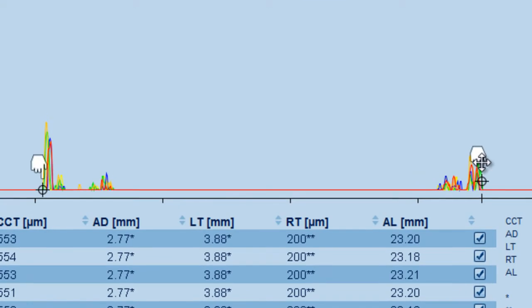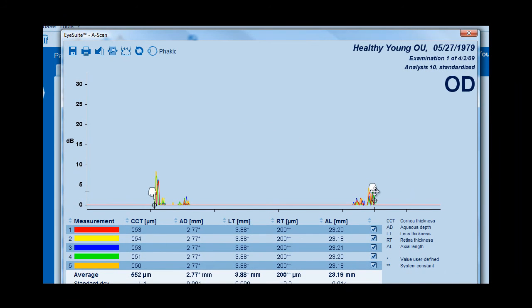The anterior lens gate should be located at the beginning of the first lens spike. The posterior lens gate should be located at the end of the last lens spike. Gates should not be adjusted along the same spike color, as this could result in a false measurement.